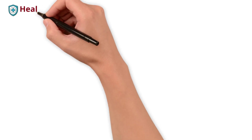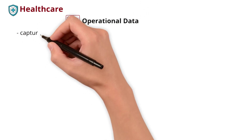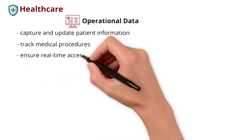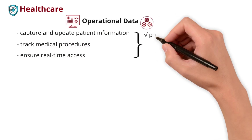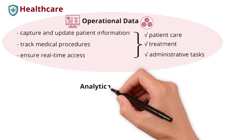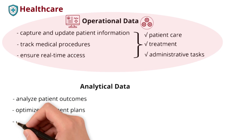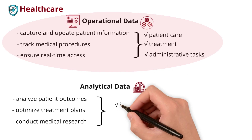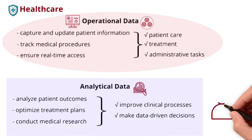In healthcare, electronic health records rely on operational data to capture and update patient information, track medical procedures, and ensure real-time access for healthcare professionals, supporting seamless processes including patient care, treatment, and administrative tasks. Analytical data is crucial in analyzing patient outcomes, optimizing treatment plans, and conducting medical research. It enables healthcare professionals to identify trends, improve clinical processes, and make data-driven decisions to enhance patient care and healthcare delivery.